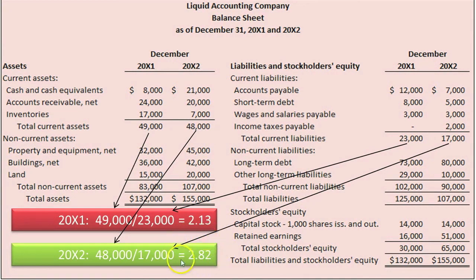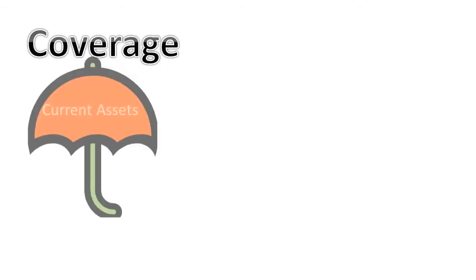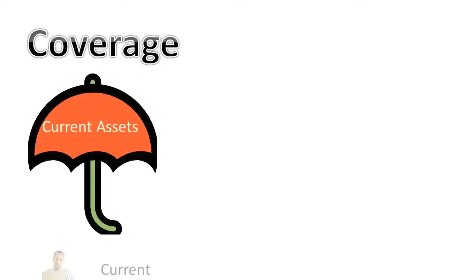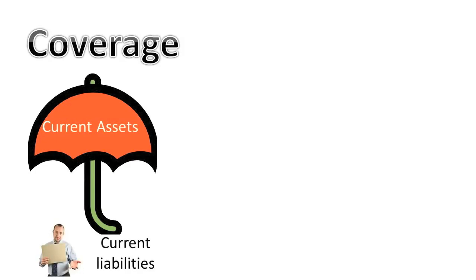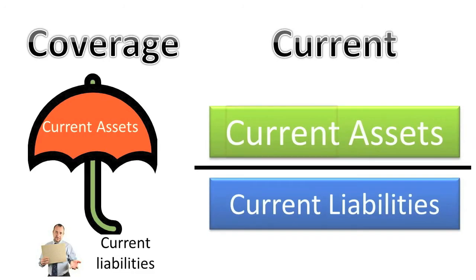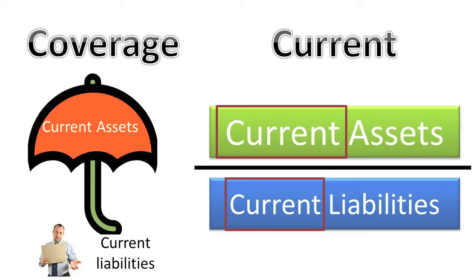Two tricks may help you remember how to compute and interpret the current ratio. First, Coverage: the current ratio indicates how a company's current assets cover its current liabilities — that is why current assets are placed on top of current liabilities (i.e., current assets divided by current liabilities) in the ratio, so that they can cover them. Second, Current: both the numerator, current assets, and the denominator, current liabilities, start with the word 'current.'